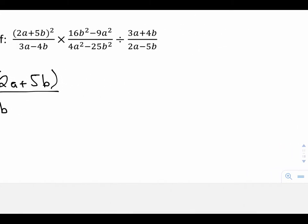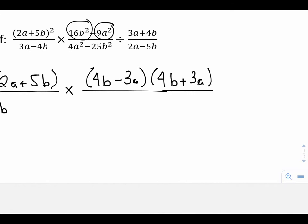Now the second fraction, I notice that my numerator is actually a difference of squares. 16b squared becomes 4b, and the 9a squared becomes 3a. So that's the minus, and then I have 4b plus 3a. Close bracket, and there we have it.